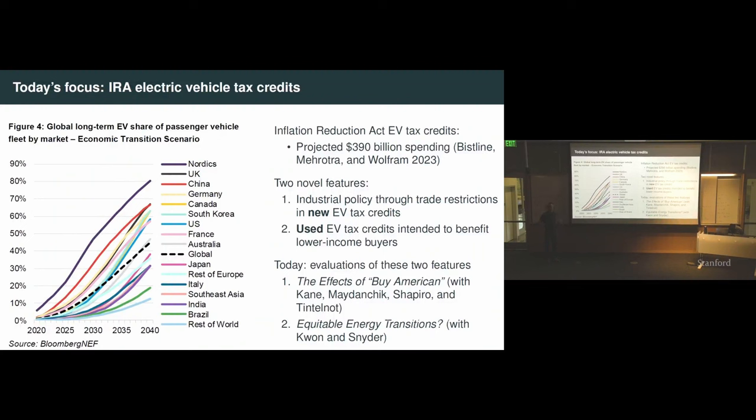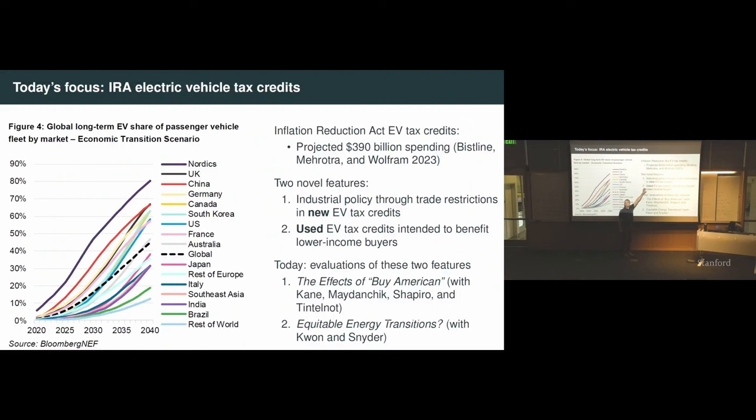The EV tax credits in the Inflation Reduction Act are projected by one recent paper to result in $390 billion of spending over 10 years. The EV tax credits in the ratings that I've seen rate highly for political risk. There are two novel features: industrial policy through the trade restrictions in the new EV tax credits, and we now have tax credits for purchasing used electric vehicles, which were intended to benefit used vehicle buyers who are on average lower income than new vehicle buyers.